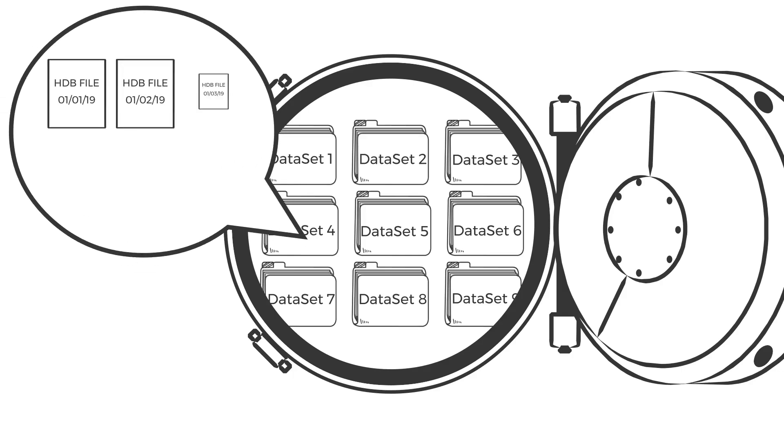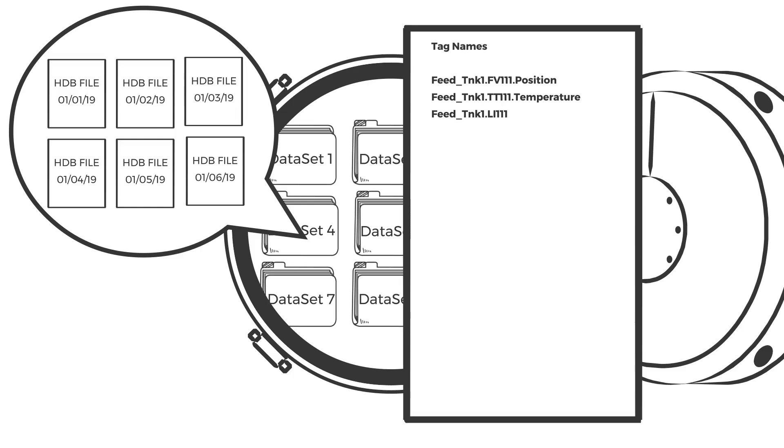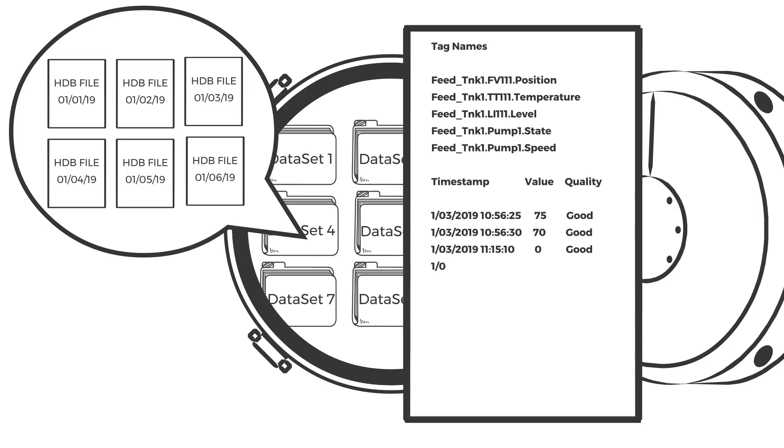Within each data set, Historian writes to a historical database file, or HDB for short. The HDB contains all the tag names and records the timestamp for every value change as well as its quality score.